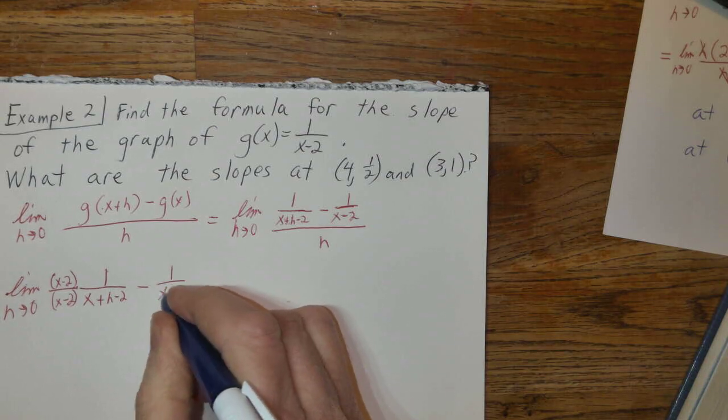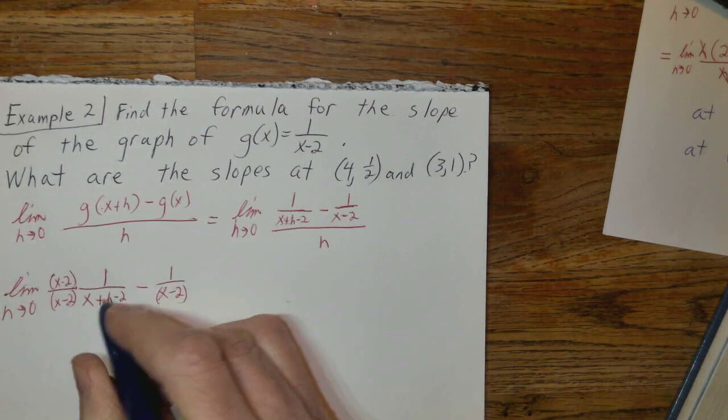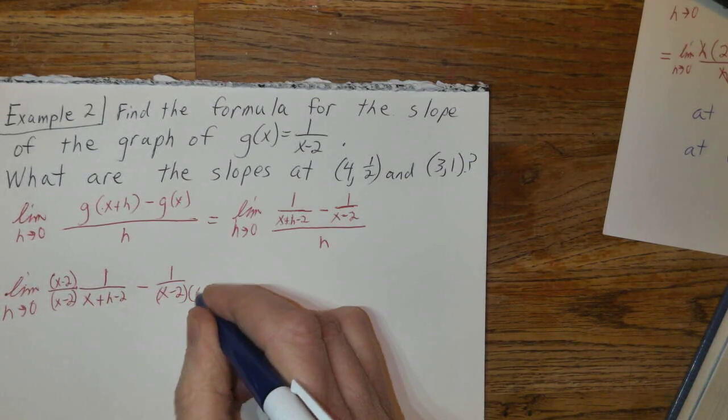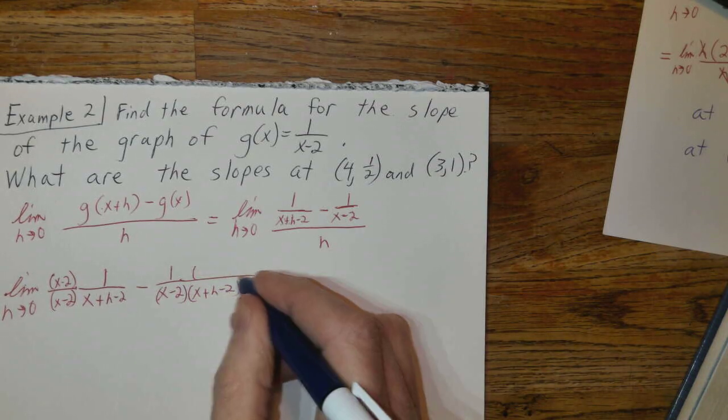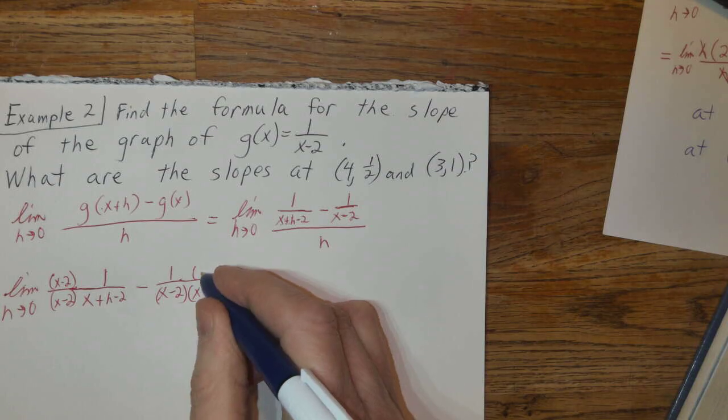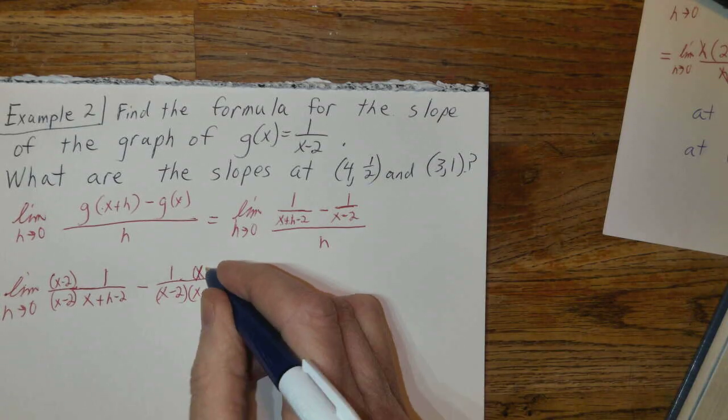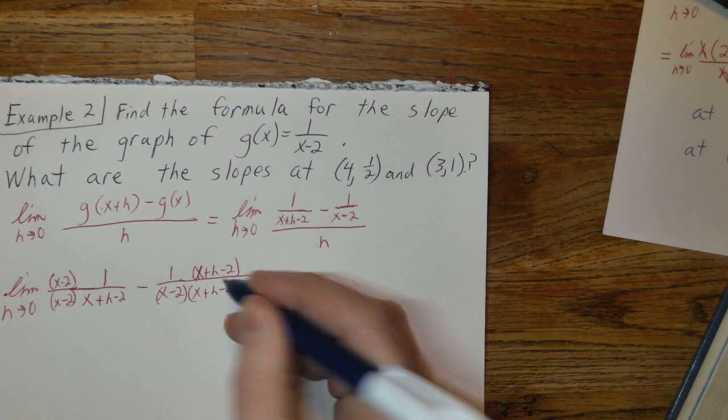Subtract that, and then I've got the 1/(x-2), and it needs this part, the x+h-2 for the common denominator. I'll just go ahead and extend that out, x+h-2 there.